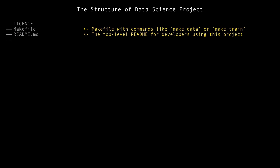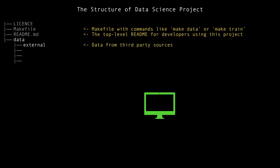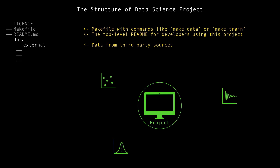The next important part in a data science project structure is data. In the data folder we should consider four directories. The first is external data — data from third-party sources. Looking at this schema: this is our project environment inside the green circle. All sources that generate data from outside this green circle are third-party sources, and what is outside of the green circle we can define as external data.